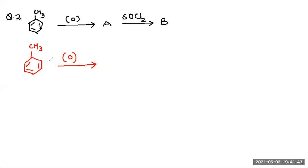Now we all know when we oxidize hydrocarbon, alkyl aromatic compound, then the methyl group is totally replaced by the COOH group and this reacts with SOCl2 to give COCl, that is benzoyl chloride. So A is benzoic acid and B is benzoyl chloride.